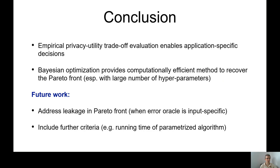So to conclude this talk. First of all, we think that privacy utility trade evaluations are very important to enable application-specific decisions, such as choice of neural network architecture or optimizer. And our results show that Bayesian optimization seems to provide a computationally very efficient method to recover this Pareto front. And this is especially useful when your hyperparameter space is huge.